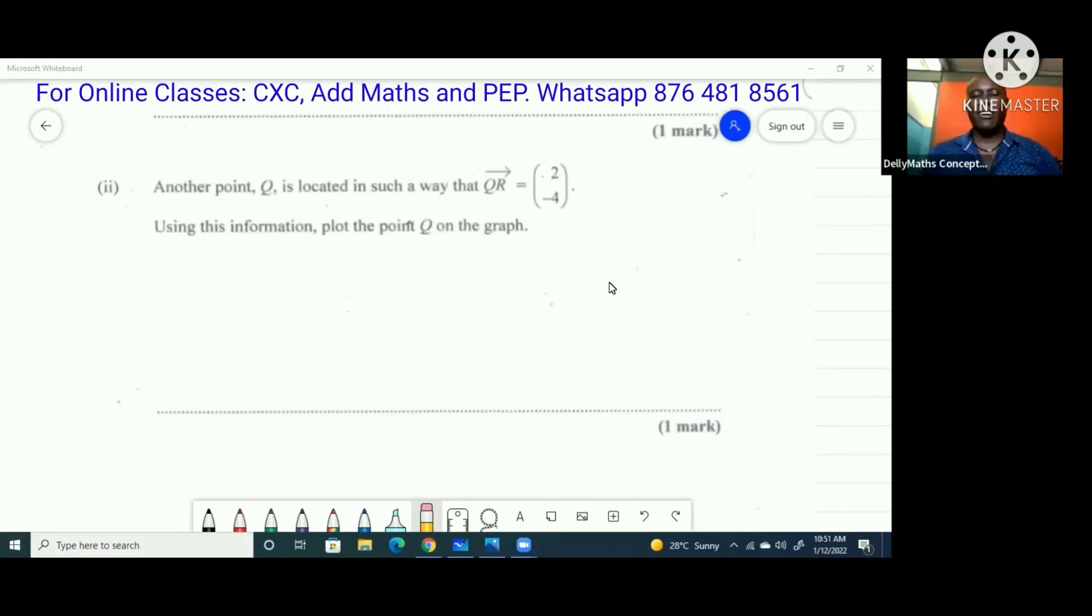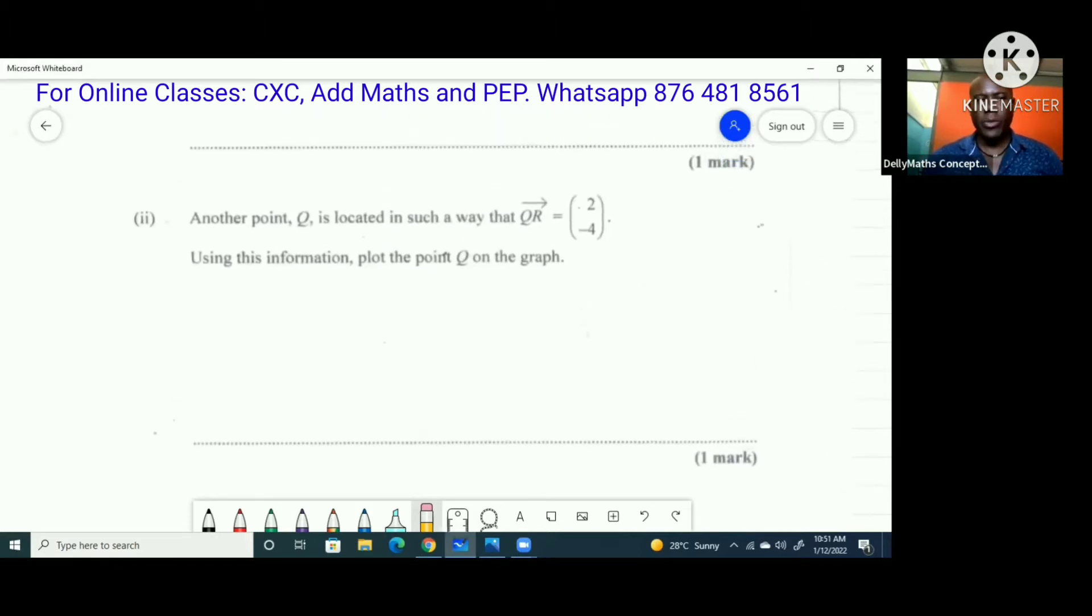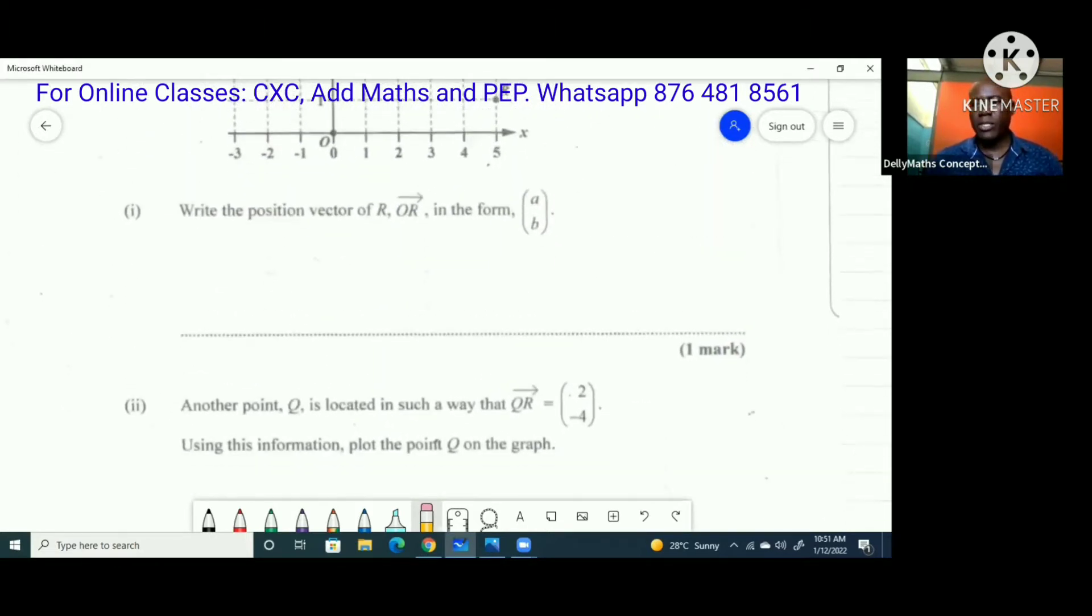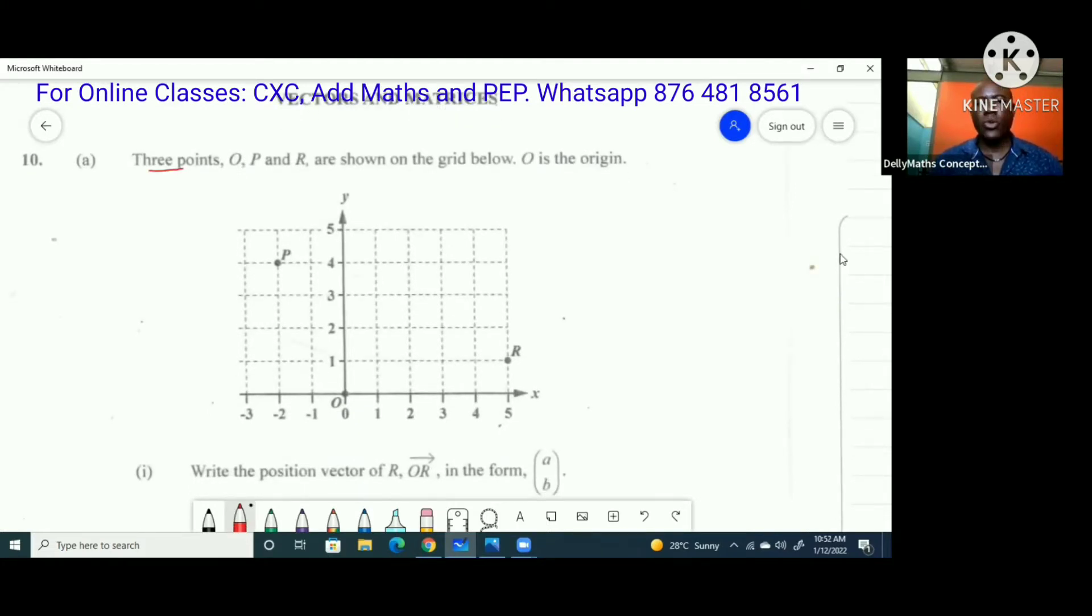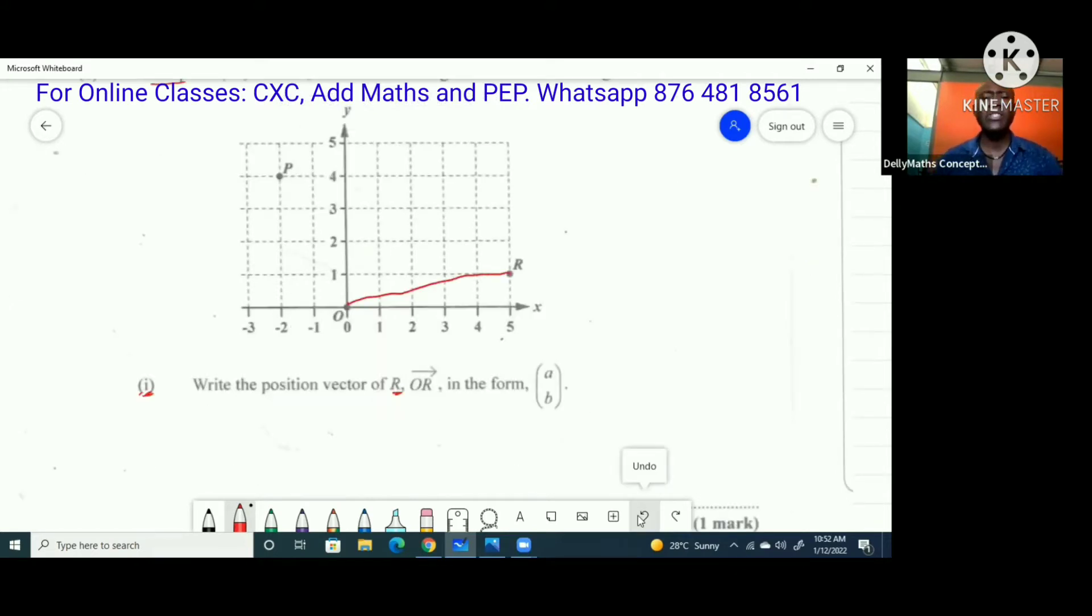All right, welcome back to daily my concepts. We're looking at question 10 on the January 2022 CSEC paper. Question 10 is titled vectors and matrices. Three points O, P, and R are shown on the grid below. O is the origin. Here's the deal: when we're talking about a position vector, if we have the coordinates of a point like R, then we have the position vector. The coordinates is 5,1, but the position vector is 5,1 in a vector format because vectors are written in a column format.